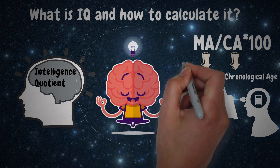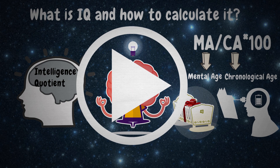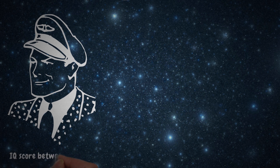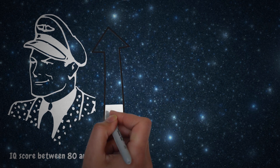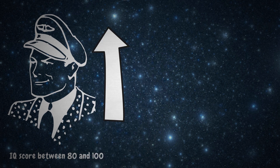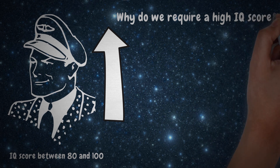If you want a video on how to determine your mental age, please let me know in the comments area below. An average human has an IQ score between 80 and 100. But the good news is that we can increase our IQ levels. However, why do we require a high IQ score?